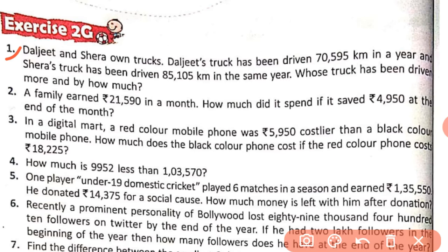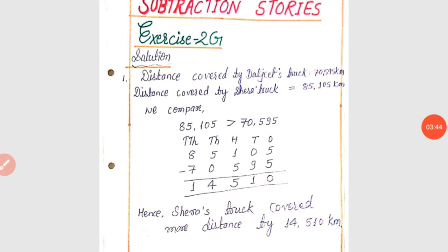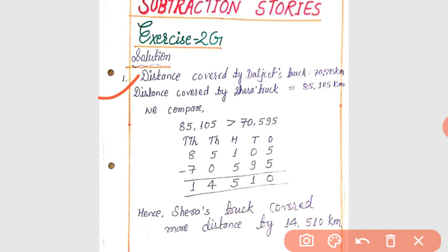Whenever we have to compare between two numbers, we do subtraction. Distance covered by Daljeet's truck is equal to 70,595 km and distance covered by Sarah's truck is 85,105 km. Now we compare both distances. We see 85,105 km is bigger than 70,595, so we subtract. After subtracting, we get a difference of 14,510 km. Hence, Sarah's truck covered more distance by 14,510 km.